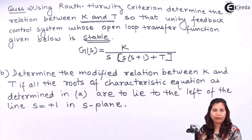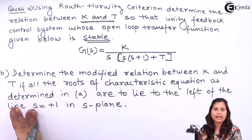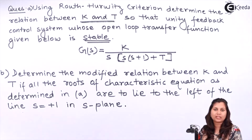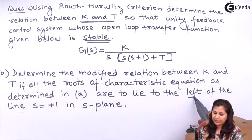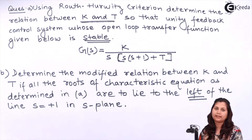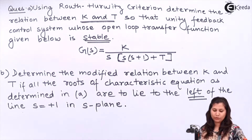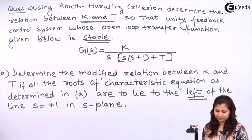In the second part, we have to determine the modified relation between K and T if all the roots of the characteristic equation are to lie to the left of the line S equals to plus 1 in the S plane. We have to find the relation between K and T so that the roots of the characteristic equation are lying on the left hand side of this line S equals to plus 1.